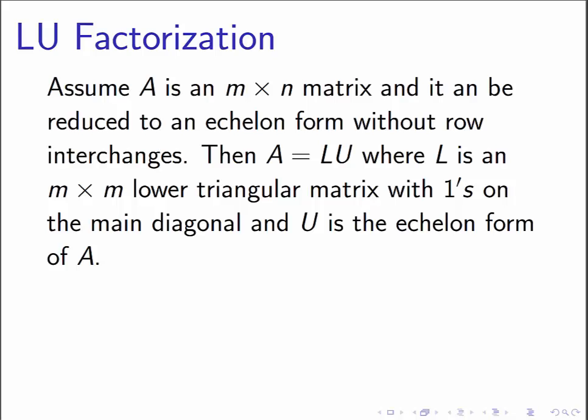Now, obviously, that is a kind of limiting assumption, but that's the way that we will start this discussion, and then later on in the discussion, we'll reduce that and just say that A can be reduced to an echelon form. So with that assumption, it will turn out that A can always be written as L times U, where L is an M by M lower triangular matrix with 1s on the main diagonal, and U is the echelon form of A.